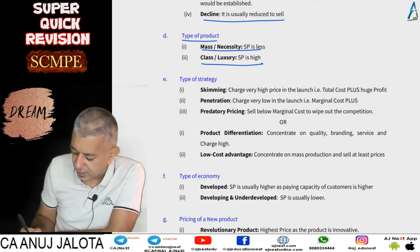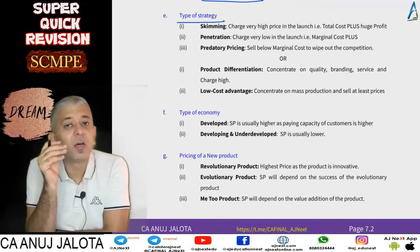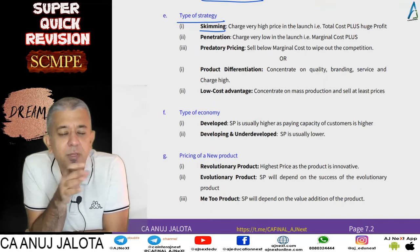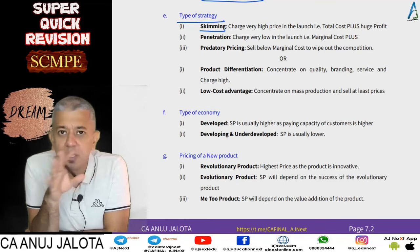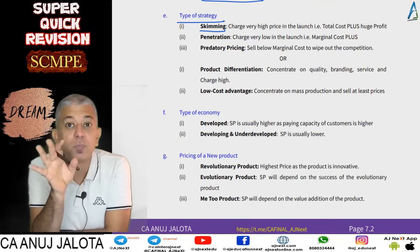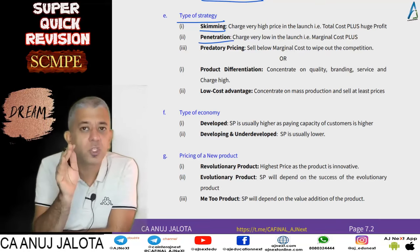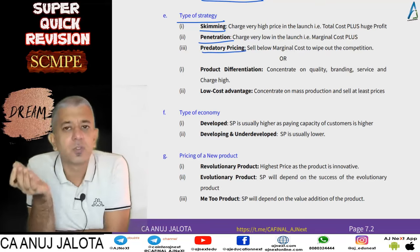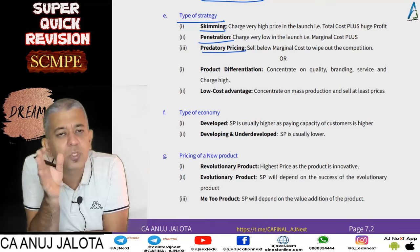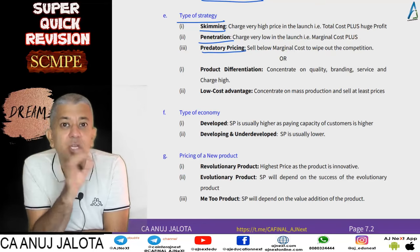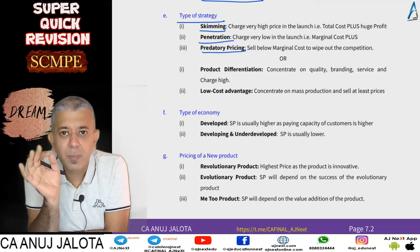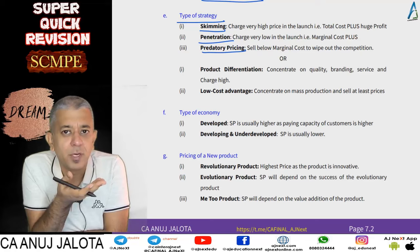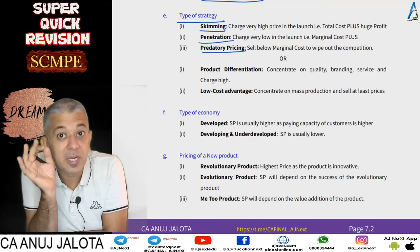If you have a mass-scale product, prices are usually less; if you have a class product, selling prices will be high. When you launch a product you can follow skimming — charge very high prices during the launch, following total cost plus with huge profit. Penetration means charging as low as possible, following marginal cost plus. Predatory pricing is what Jio did — you sell below your variable cost with the sole intention of capturing the entire market, then once competitors are eliminated you raise prices.